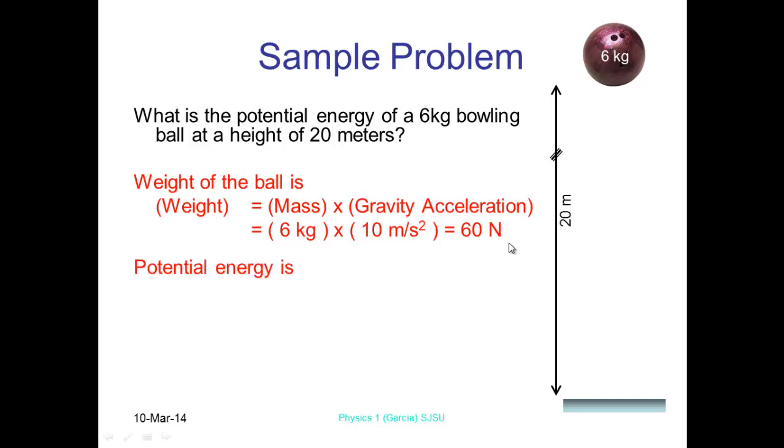So potential energy is the weight times by the height. And so therefore that's going to be 60 times by 20, which is going to give you 1,200 joules.